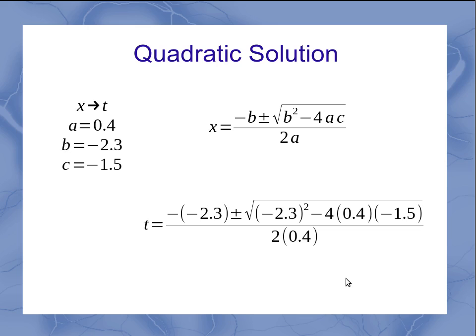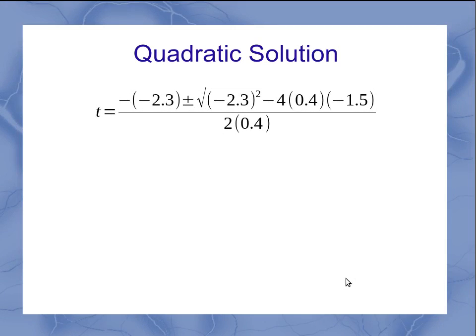Once you've got all those things plugged in, then you want to start simplifying. Taking that same equation up here at the top, we can see that we can start simplifying. If you've got minus signs out here, two minus signs make the positive. My number that I've got squared and my other numbers, I can multiply those out.